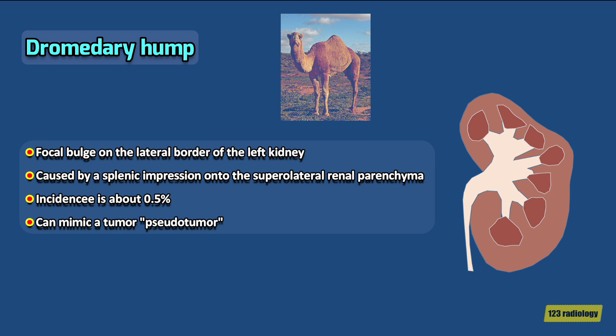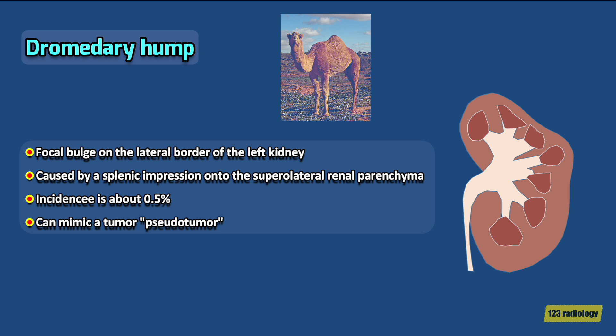Dromedary hump is a normal anatomical variant of the kidney. It is a prominent focal bulge on the lateral border of the left kidney, caused by a splenic impression onto the supralateral adjacent renal parenchyma. It is similar in appearance to the hump of a dromedary camel, thus the name. The incidence of this normal anatomic variant is about 0.5%. It can sometimes mimic a renal neoplasm and is therefore considered a renal pseudotumor.